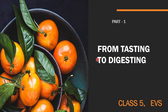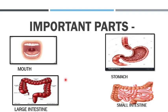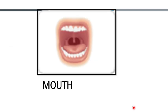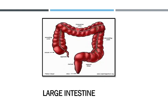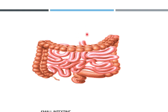Let's have a quick recap. This is a picture of our digestive system — from mouth to food pipe, then our stomach, then large intestine and small intestine. Important parts are mouth, large intestine, stomach, and small intestine. In the mouth we have tongue, teeth, and saliva. The stomach is where our food is digested. The large intestine helps to exit the waste material of our body. And the small intestine uses the useful elements to make us strong.